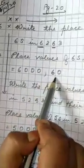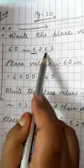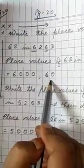For first 6 answer is 6000. For second 6 answer is 60. Because 6 is in 1000 place, answer is 6000. Here 6 is in 10th place, so answer is 60.